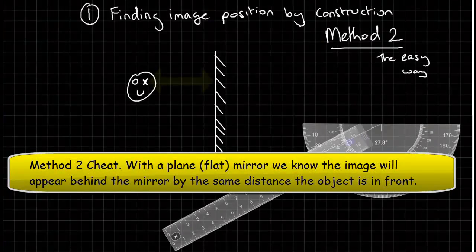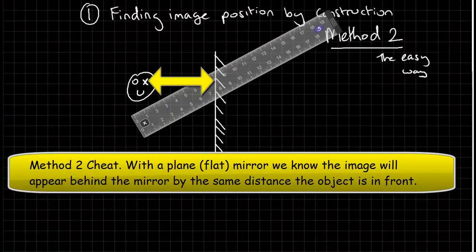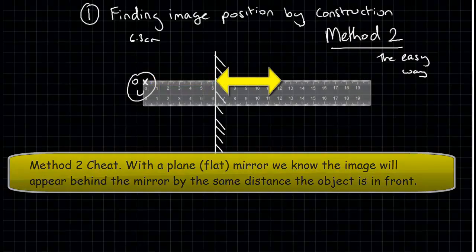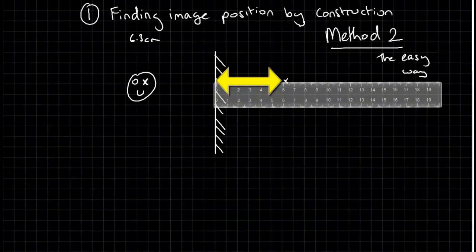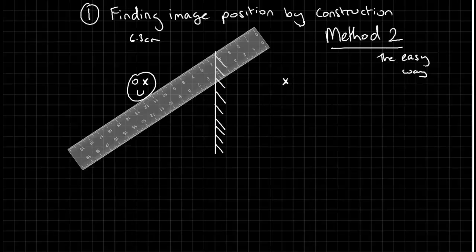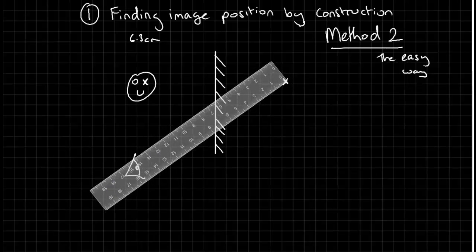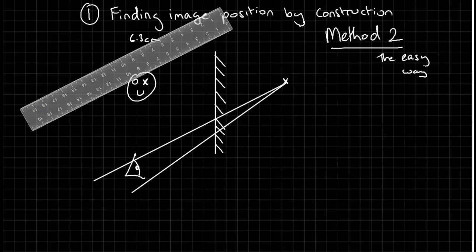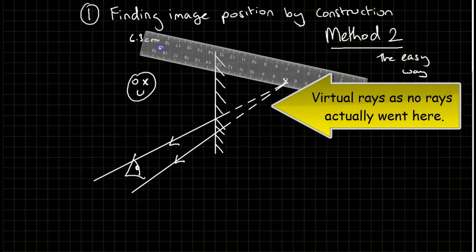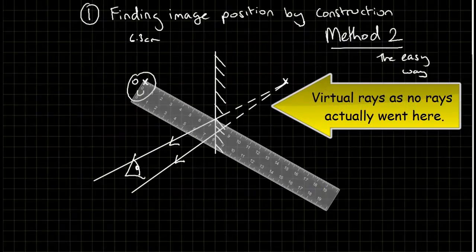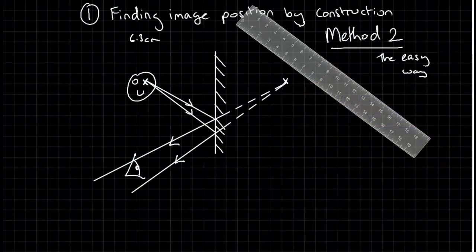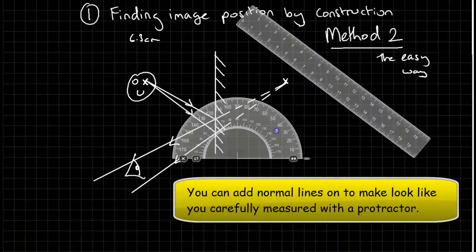Because it's a plain mirror or a flat mirror, we know that the image will appear the same distance behind the mirror as the object is in front of the mirror. So we can just cheat and measure that distance and put the cross in. Then, just drawing rays from that point to the eye, two straight lines, and making it clear which rays are real and which ones are virtual by rubbing out lines. We can get very quickly to the full ray diagram, adding normal lines just to make it look like you did actually measure those angles, just makes it look a bit more authentic.